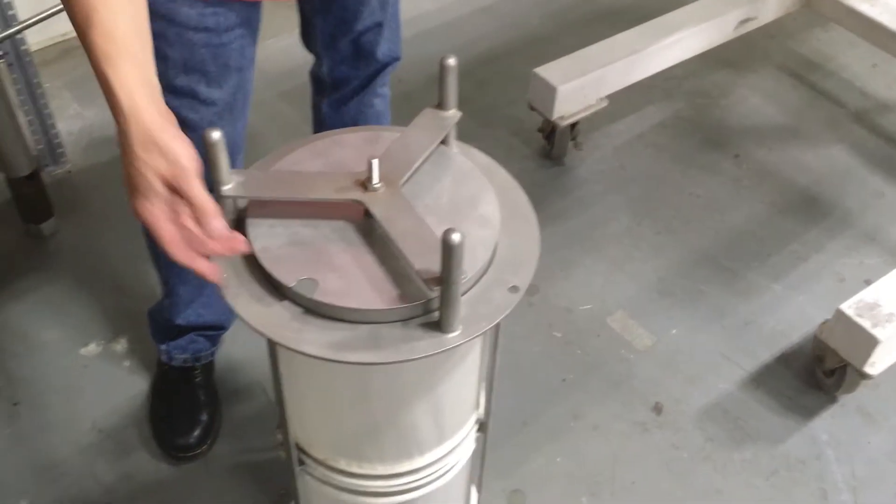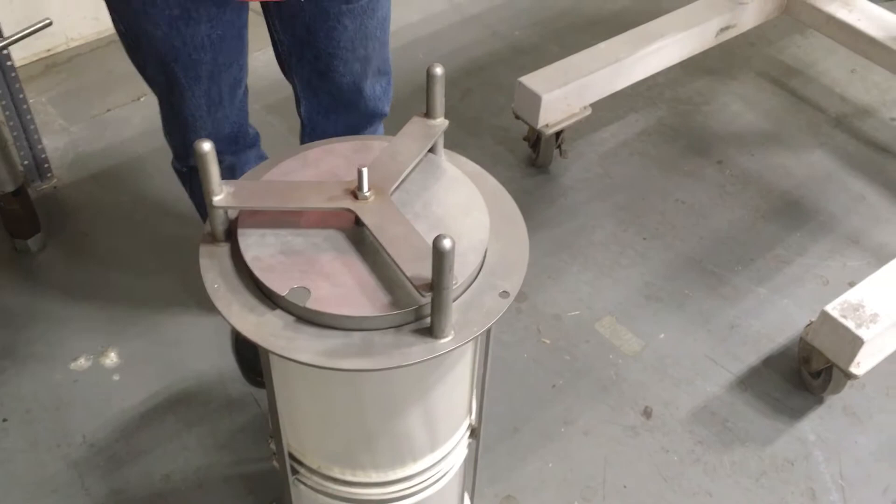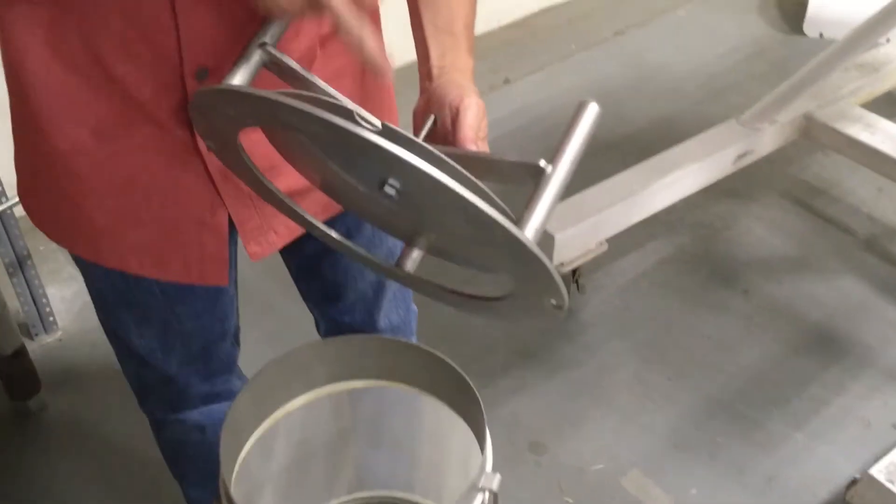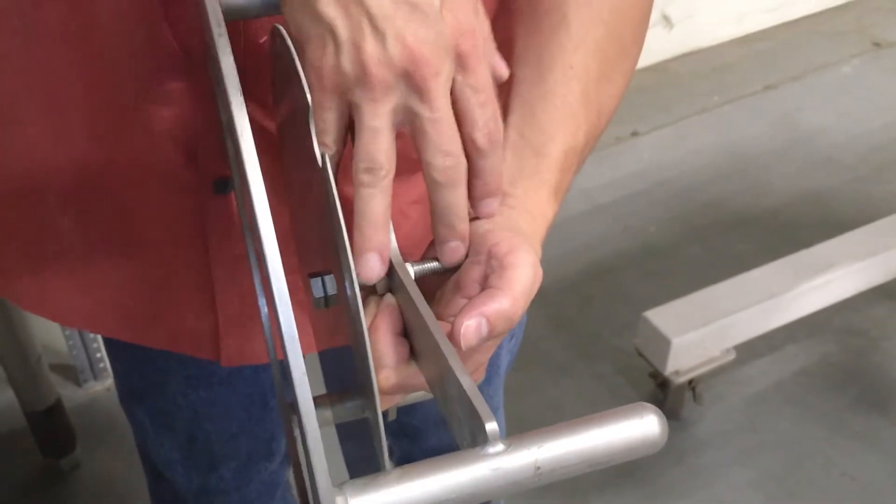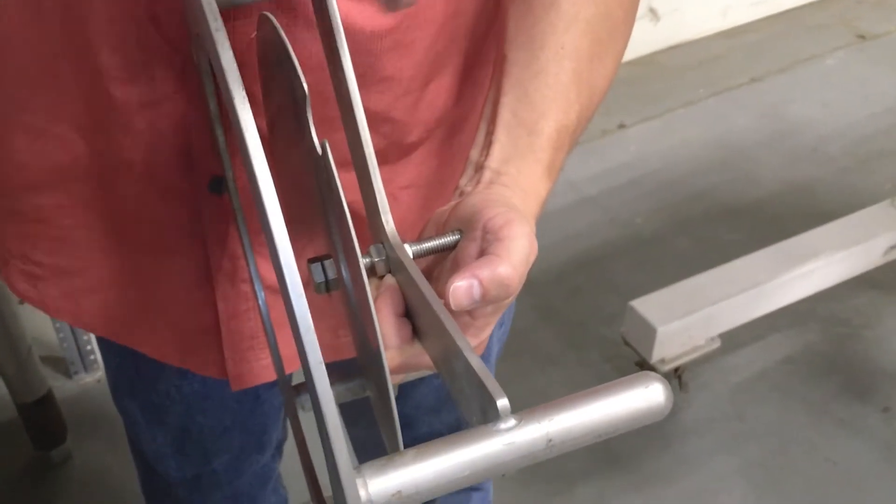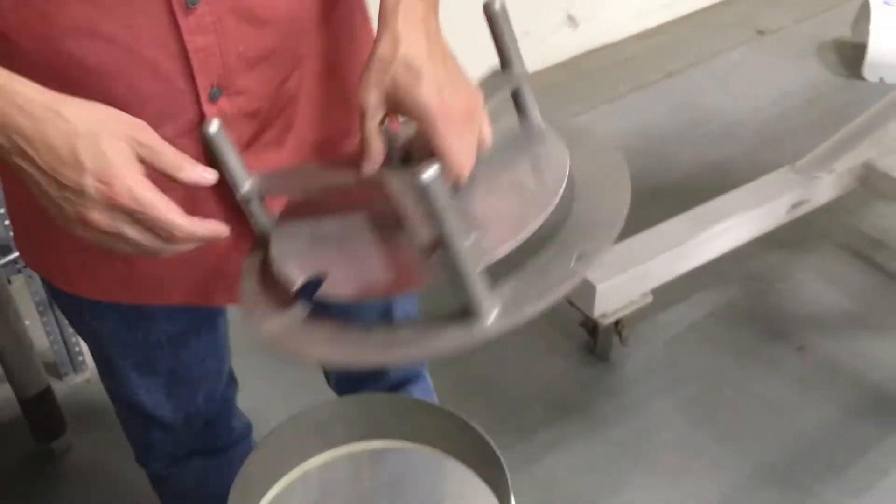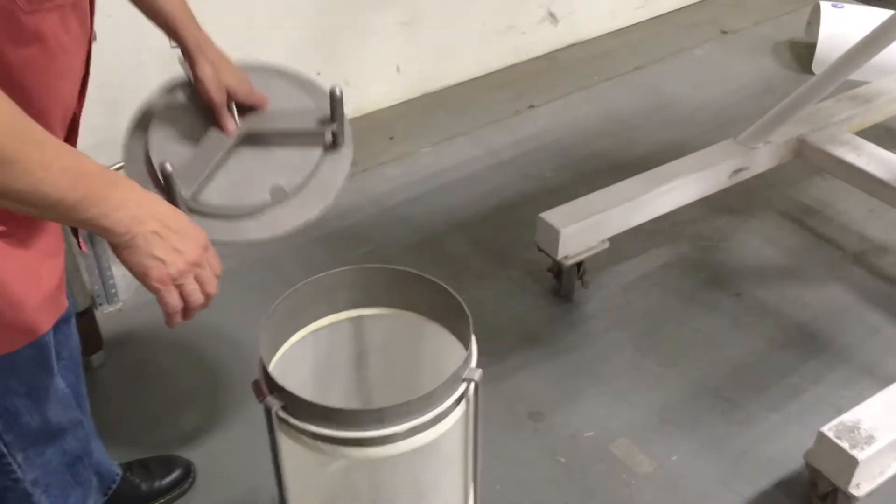Something like a quarter inch or eighth of an inch would be a typical gap, but we can adjust it by adjusting the position of these nuts on this thread. We can move this in and out. Now we'll put the basket back in the sifter.